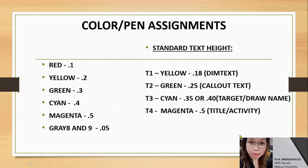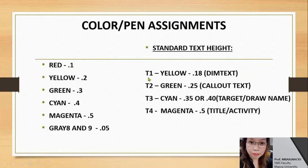These are the color and pen assignments associated per layer. L1 is red, equivalent to pen assignment 0.1; L2 is yellow, equivalent to 0.2; L3 is green, equivalent to 0.3; L4 is cyan, equivalent to 0.4; magenta is 0.5; and gray number 8 and gray number 9 are 0.05. The title block already has preloaded layers in colored format.